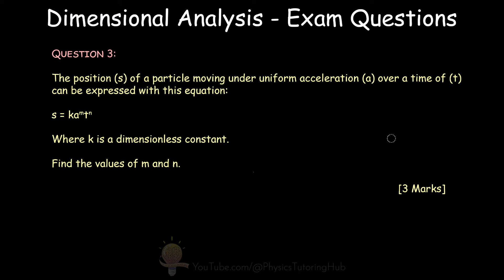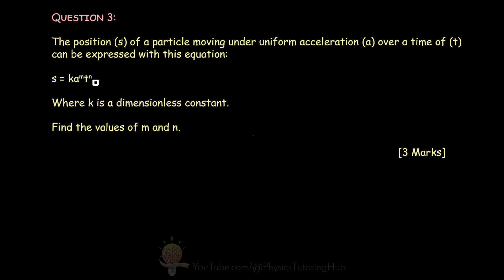Our final question says the position s of a particle moving under uniform acceleration a over time t can be expressed as s equals some dimensionless constant k multiplied by a to the power of m multiplied by t to the power of n. Our goal is to find what these powers m and n are, assuming the equation is dimensionally consistent. We already know the dimensions on both sides balance, and we need to find the powers m and n.